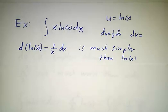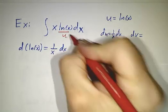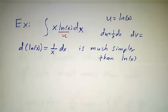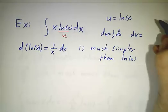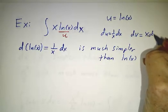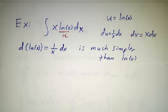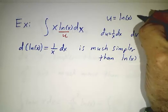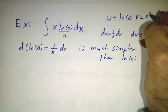Well, if that's u, then everything that's left has got to be dv. So dv is x dx. And we say, okay, what happens when we integrate x dx? V is going to have to be x squared over 2.